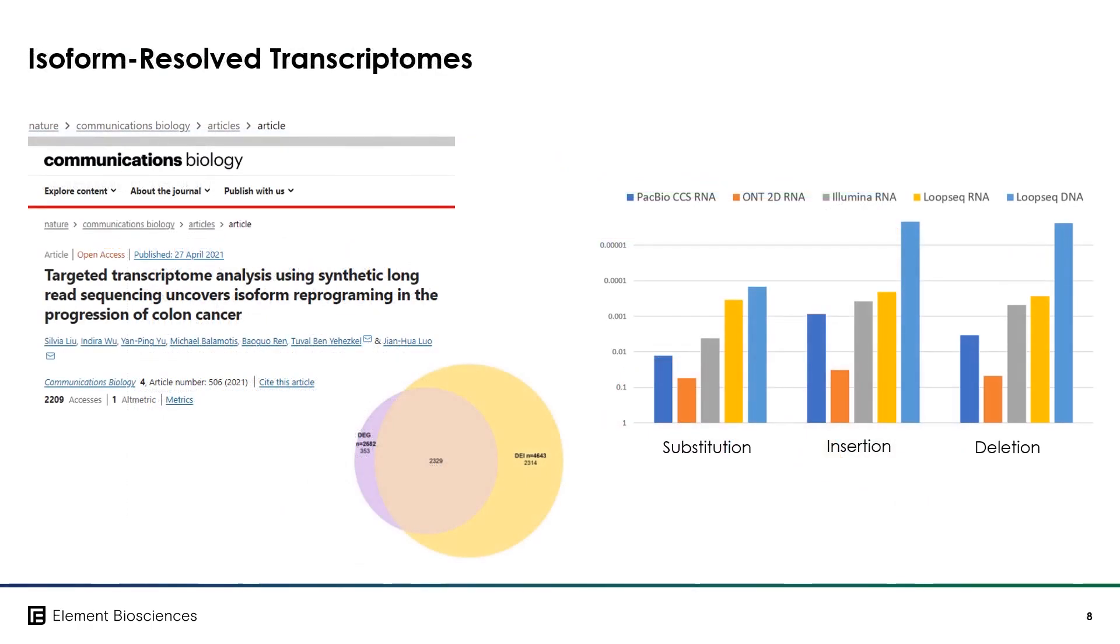In this publication from 2021, a customer sought to evaluate the different errors that can occur in transcriptome sequencing data using multiple technologies such as Illumina short reads, PacBio and Oxford Nanopore native long reads, and LoopSeq synthetic long reads. Across all these error types, LoopSeq performs better than any of the competitive technologies on the market.